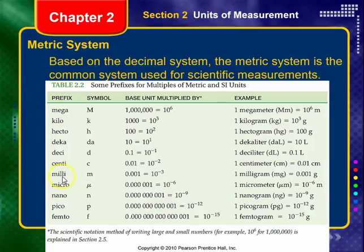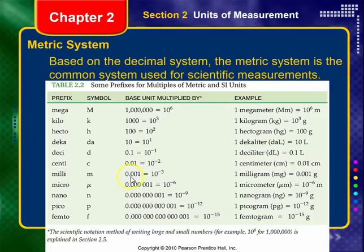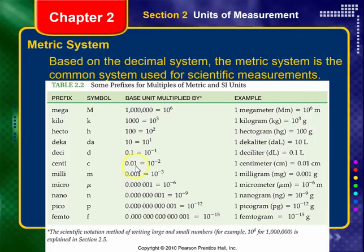I've been using terms like milli and centi — this is what makes the metric system easy. If I have a gram, I have one gram. If I have a milligram, I have one-thousandth of a gram — 0.001 grams. When I say milli, I'm referring to 0.001. If I have a centimeter, centi refers to one-hundredth — 0.01 meters. So one centimeter equals 0.01 meters.